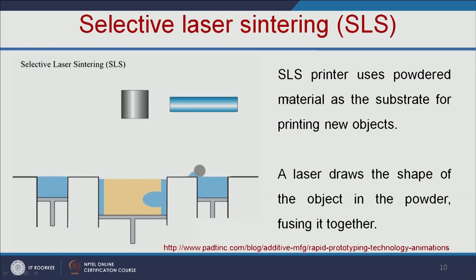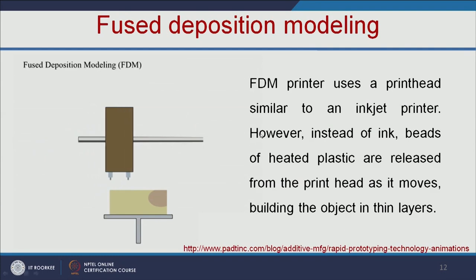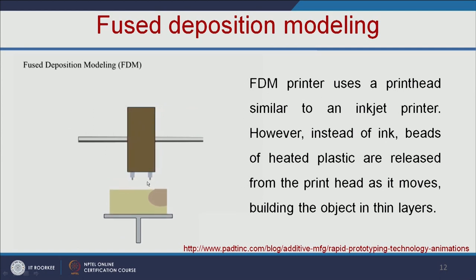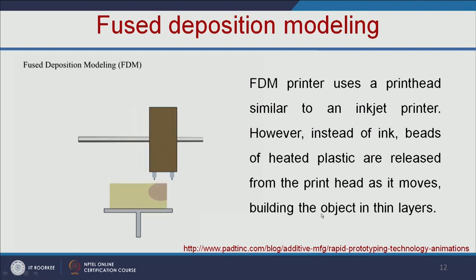In selective laser sintering, the SLS printer uses powdered material as a substrate for printing new objects. The laser draws the shape of the object in the powder and fuses it together. In thermal inkjet printing, inkjet printing is a non-contact technique that uses thermal, electromagnetic, or piezoelectric technology to deposit tiny droplets of ink or any other material onto a substrate according to digital instructions. In fused deposition modeling, the printer uses a print head that releases beads of heated plastic as it moves, building the object in thin layers.